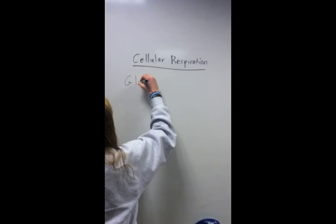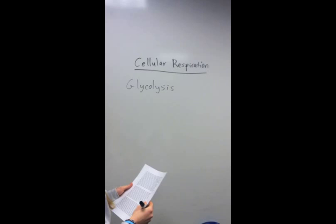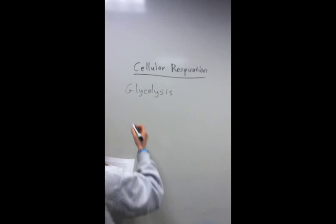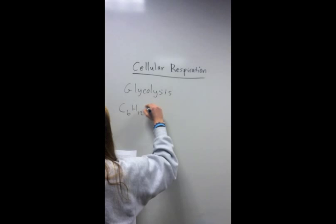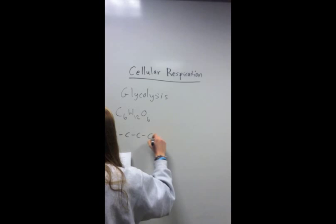So first we're going to start with glycolysis. Basically glycolysis is the breaking down of glucose into pyruvate which is then used in the Krebs cycle. So first we start off with one molecule of glucose which is C6H12O6.